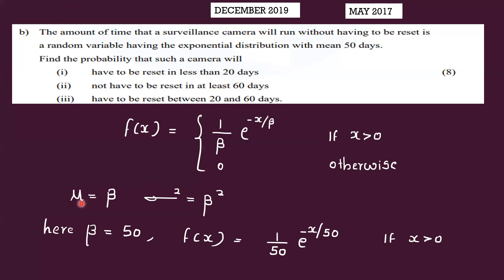In this case, mu is equal to beta for the exponential distribution. The mean is equal to beta, which is equal to 50. So f(x) = (1/50) * e^(-x/50), for x greater than 0.